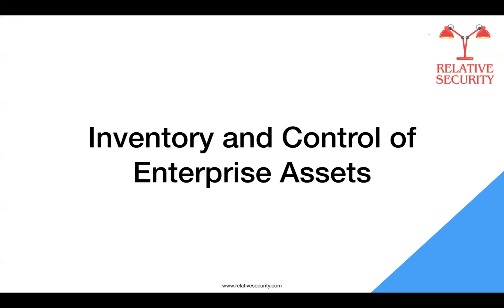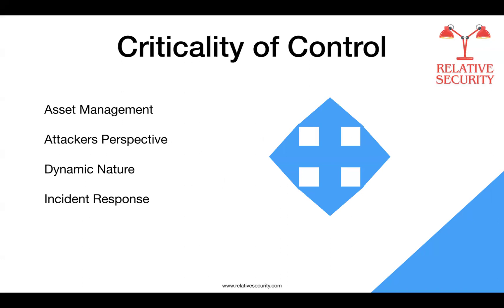Now let's discuss the first control: Inventory and Control of Enterprise Assets. This CIS control emphasizes the active management of all enterprise assets, including end user devices, network devices, IoT devices, and servers. This involves inventorying, tracking, and correcting assets connected physically, virtually, remotely, and within cloud environments — basically anywhere an asset is connected to your network should be managed by you. The objective is to have an accurate understanding of all assets requiring monitoring and protection within the enterprise. Additionally, this control helps identify unauthorized and unmanaged assets, enabling their removal, remediation, or enhanced security.